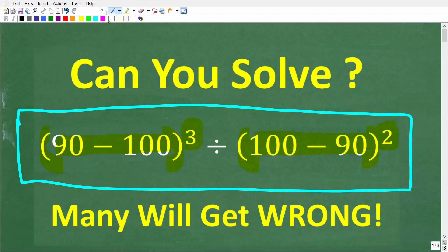I'm going to show you the correct solution in just one second. Then, of course, I'm going to solve this problem step by step. So one more time, we have 90 minus 100 in parentheses to the third power divided by 100 minus 90, all this to the second power or squared.